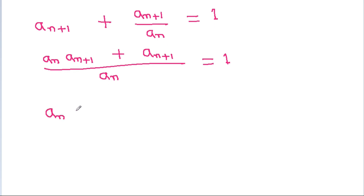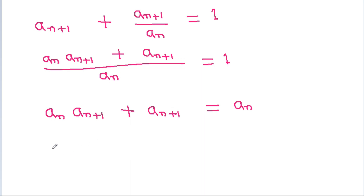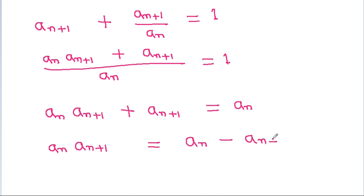Multiplying through by a_n, we get a_n times a_{n+1} plus a_{n+1} equals a_n. Rearranging, a_n times a_{n+1} will be equal to a_n minus a_{n+1}.